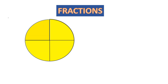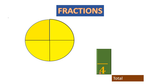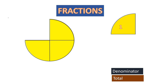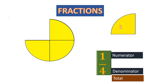Let's understand it better. How many parts are there in total in the circle? There are four parts. So four we will write at the bottom. The bottom number represents the total number of parts, and this is called the denominator. Whatever we write below in a fraction is called the denominator. The numerator indicates how many out of the total are used or how many out of the total is asked in the question.